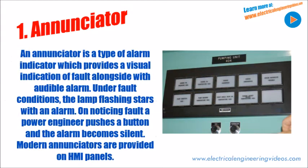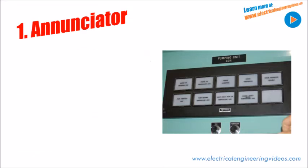An enunciator is a type of alarm indicator which provides a visual indication of a fault that is followed by an audible alarm. Under fault conditions, the lamp flashing starts with an alarm. On noticing the fault, a power engineer pushes a button and the alarm becomes silent.